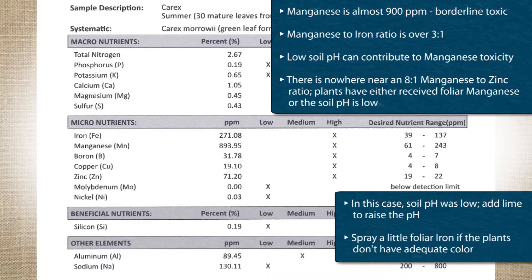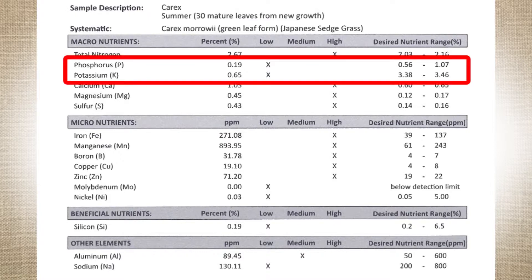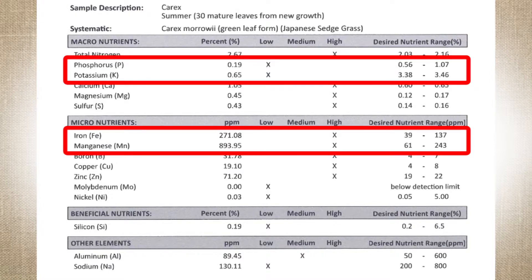I would also maybe spray a little iron to make sure they have adequate color, although when I took these samples the color in the plants was pretty good. We don't want to get into a manganese toxicity situation. Other than that, the foliar nutrients really look fine. So we have low phosphorus and potassium, an excess of manganese, and a wide manganese to iron ratio — I don't see anything else here that concerns me.